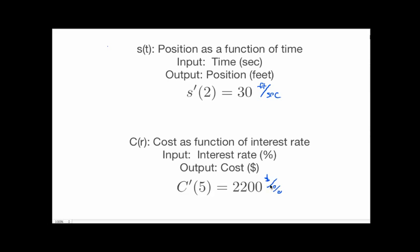And what that would mean is for every one, at this point, right when the interest rate is 5%, 1% increase in the interest rate would result in a $2200 increase in the total cost. So we interpret these derivatives using the units as rise over run. And if I bump this up by one, this goes up by this much.